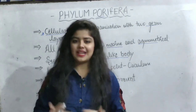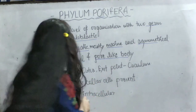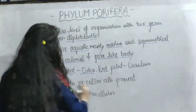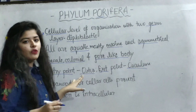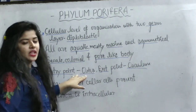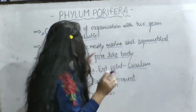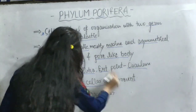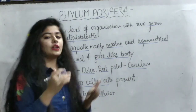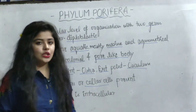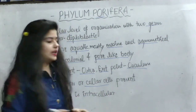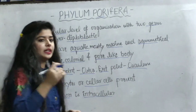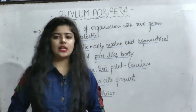The body has millions of pores, which are their identification feature. Fourth point: the entry point for water is ostia, and the exit point is osculum. Water enters the body with the help of ostia and water exits with the help of osculum. Choanocytes or collar cells are present in their body, which help in food digestion. Digestion is intracellular, meaning digestion takes place inside their body cells.